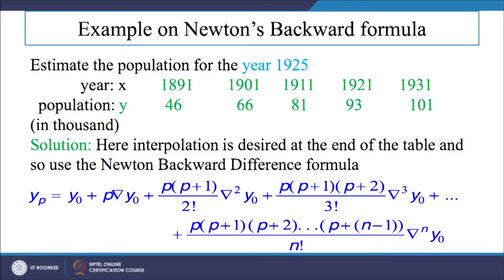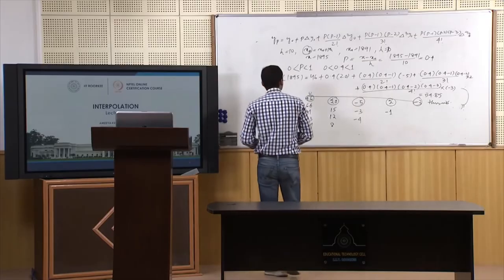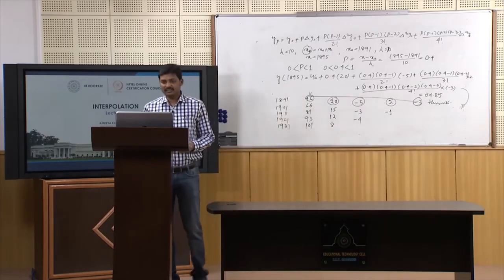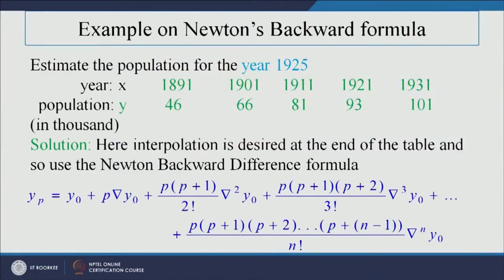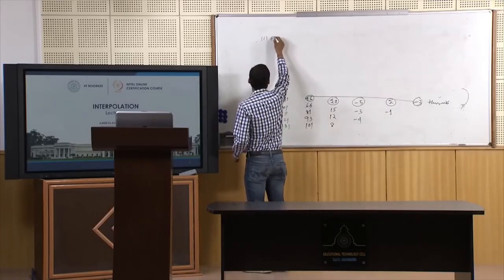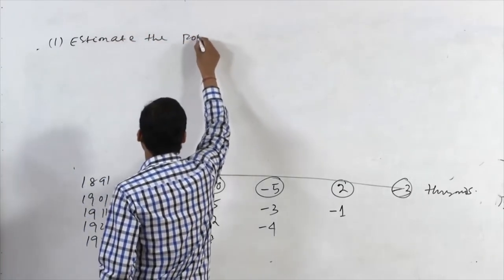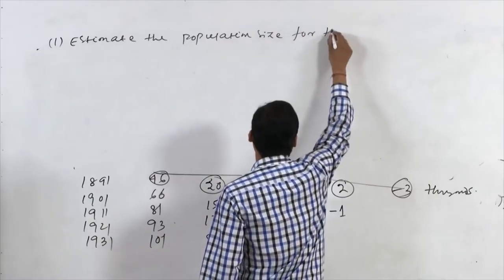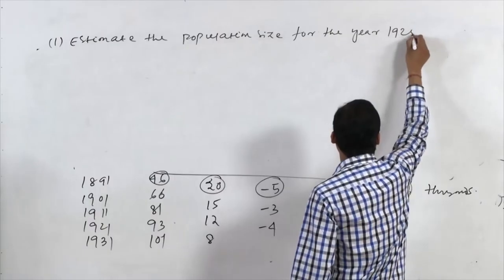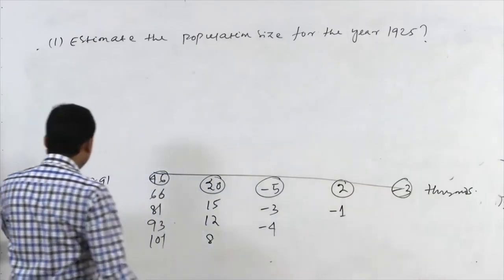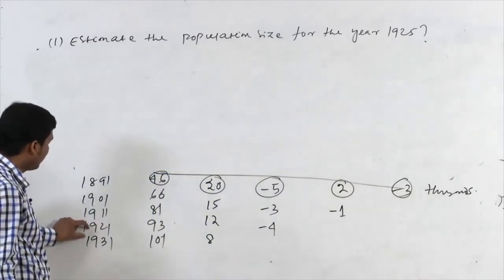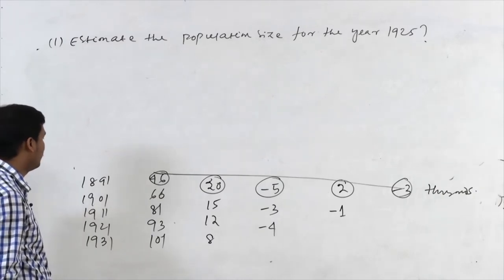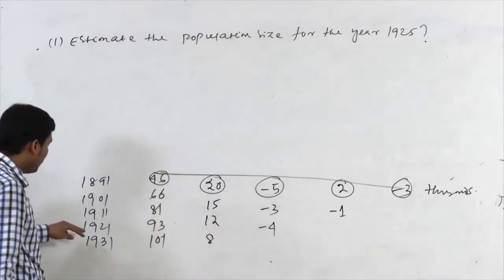Now for the backward difference formula: since all values are known, we use Newton's backward difference formula when the value is asked at the end of the table. The second question asks to estimate the population for the year 1925. Since 1925 exists at the lower end of the table, we use Newton's backward difference formula.